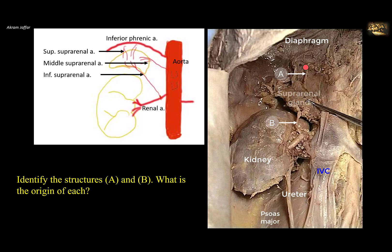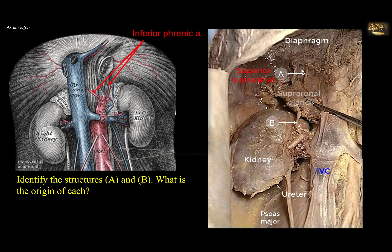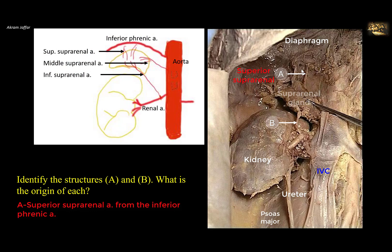The arteries are: the superior suprarenal, which is a branch of the inferior phrenic artery. The inferior phrenic artery, as the name indicates, is located on the inferior surface of the diaphragm and arises immediately inferior to the aortic hiatus of the diaphragm. Apart from the branches it gives to the diaphragm, it also supplies the suprarenal gland. Then we have the middle suprarenal artery, which is not shown here — you can see the vein but not the middle suprarenal artery. The middle suprarenal is a lateral branch of the abdominal aorta, just above the renal arteries. The other artery shown here is a branch of the renal artery — this is the inferior suprarenal artery.